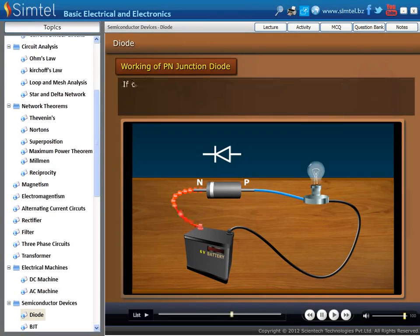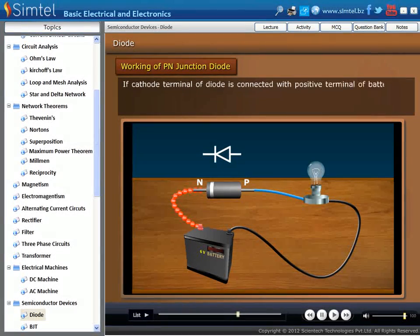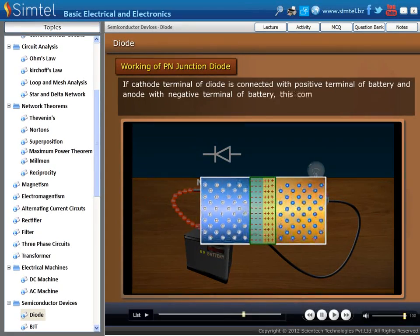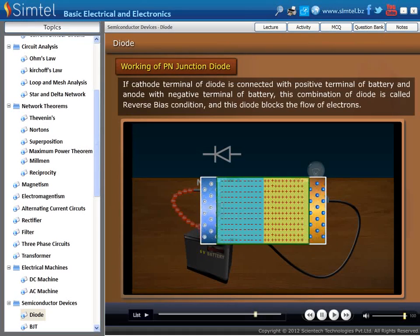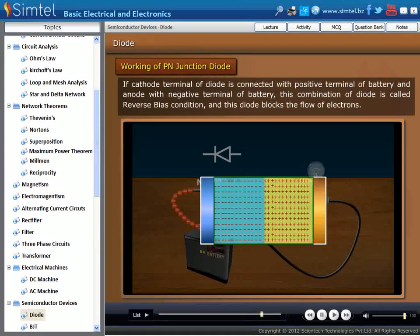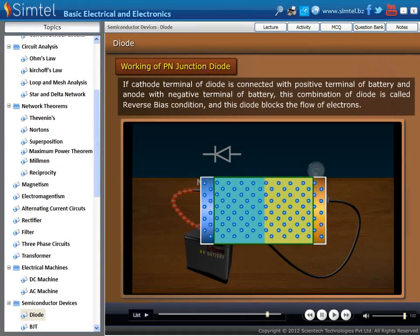But in reverse bias condition, diode acts as an open switch and it blocks the current flow from battery to bulb. In this condition bulb does not glow.